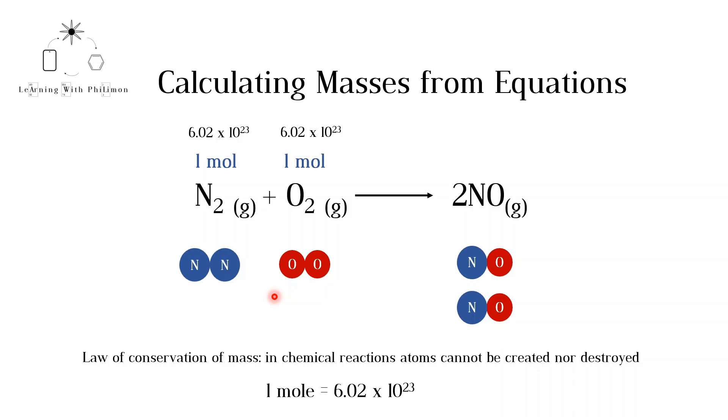A balanced equation not only tells us the identity of the reactants and products, but also the amount of each required for the reaction to occur. This information is given by the coefficients, the numbers in front of each chemical. Both nitrogen and oxygen have a coefficient of 1. Note that the 1 is not written. This means that every nitrogen molecule needs 1 oxygen molecule to react with. If you have 1 mole of nitrogen molecules, you need 1 mole of oxygen molecules for all of them to react.